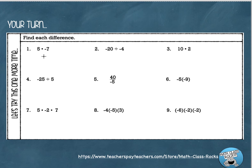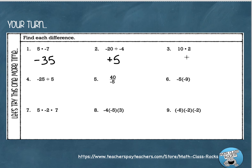Let's go over these. Positive 5 times negative 7 — those signs are different, so my answer is negative, and 5 times 7 is 35. Next: negative 20 divided by negative 4 — those signs are the same, so my answer is positive, and 20 divided by 4 is 5. For number 3, I've got two positives multiplied together — signs are the same, so positive 10 times positive 2 gives a positive answer, and 10 times 2 is 20. For number 4, different signs — negative 25 and positive 5 — so my answer is negative, and 25 divided by 5 is 5.